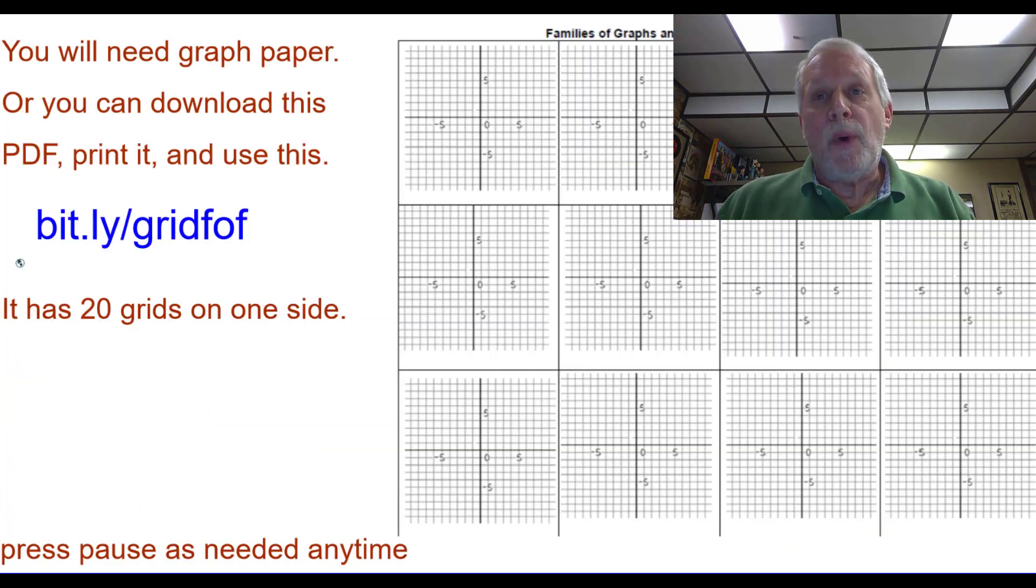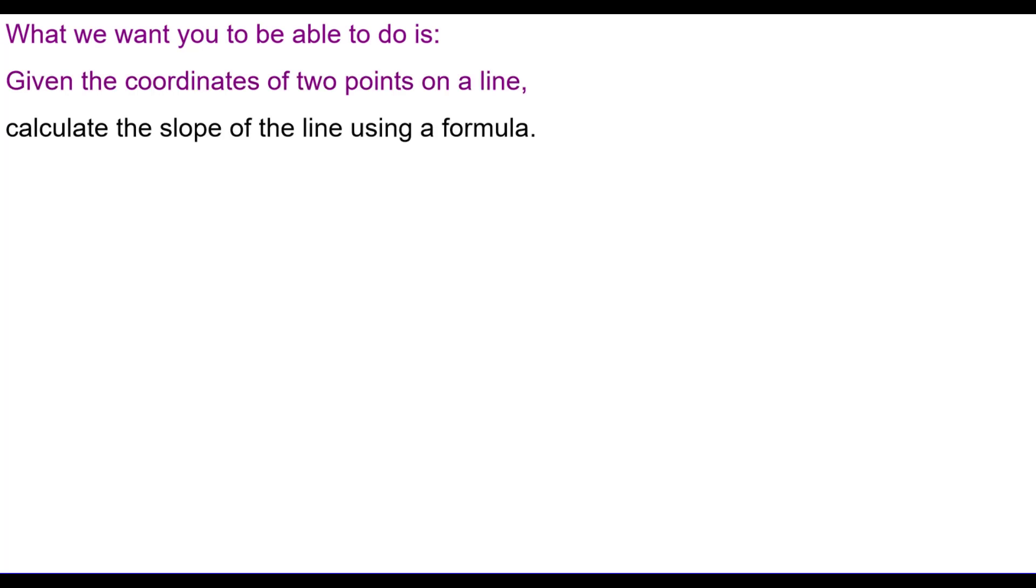You may need graph paper or you can download this PDF and print it. Press pause as needed anytime during the video. What we want you to be able to do is, given the coordinates of two points on a line, calculate the slope of a line using a formula.